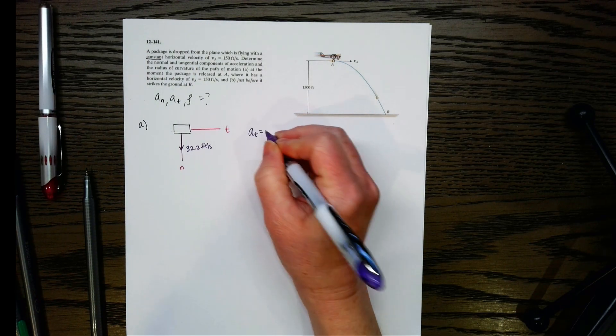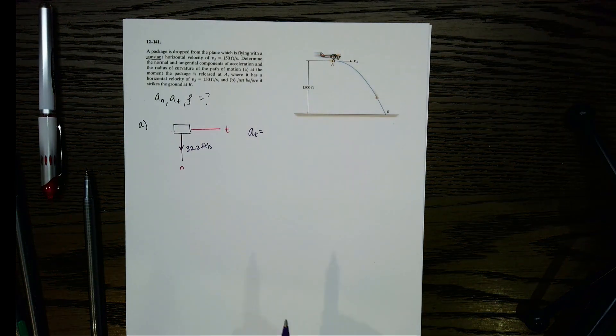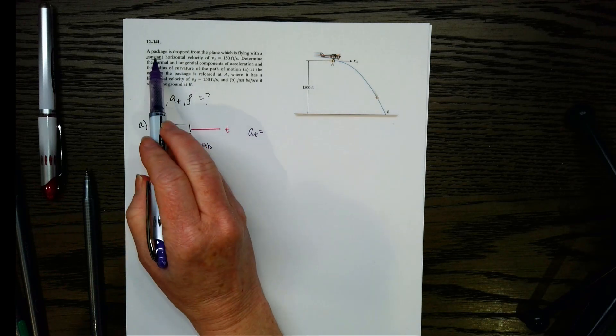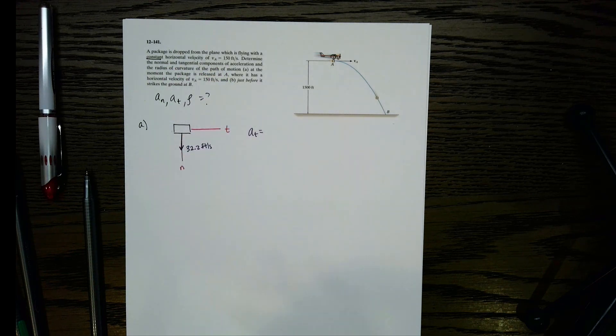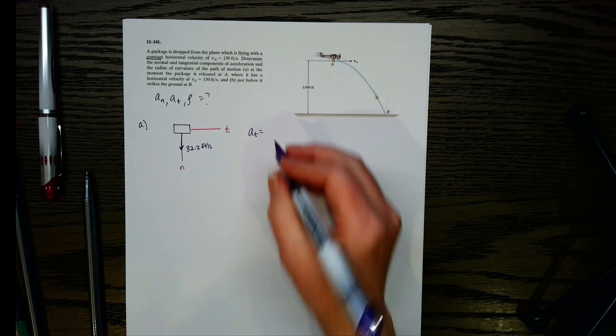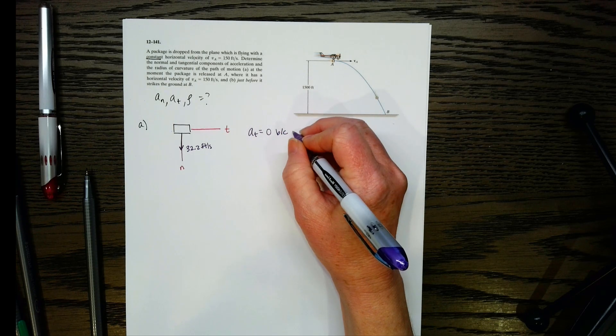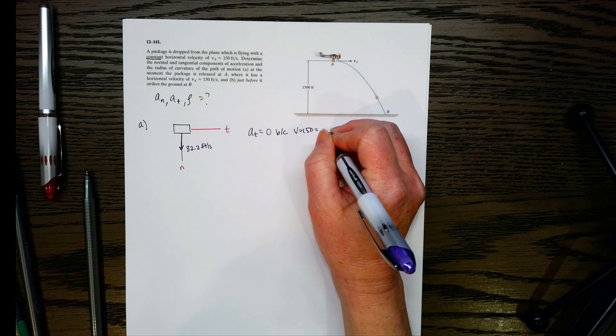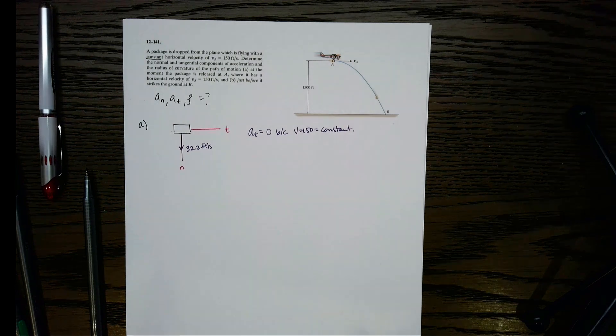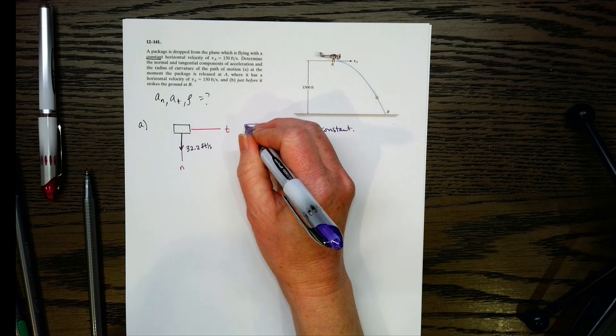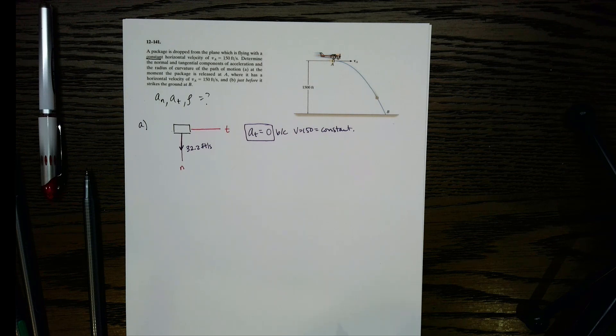Now that we have that, let's see if we can find our components. So AT. Let's think about what AT is. AT is just like a regular acceleration, like you've got a car that is accelerating at three feet per second squared, that would be an AT. So in this case, what would we have? For this problem, we would have zero for AT, and the reason for that is because we have a constant horizontal velocity. So anytime we have that constant velocity, we're going to have an AT of zero.